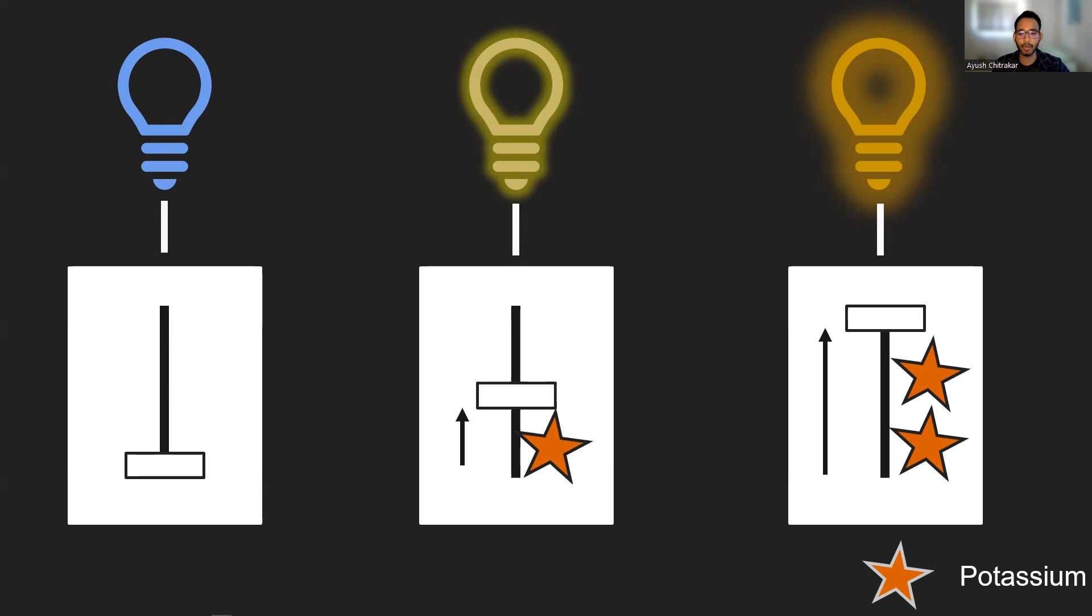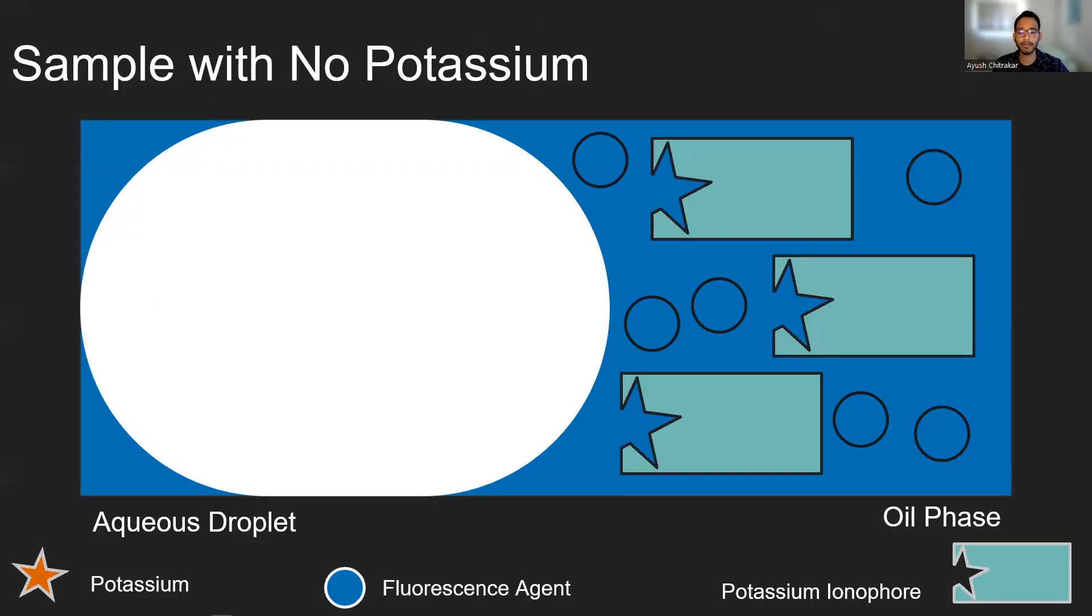So our potassium selective oil is sensitive to different amounts of potassium that is present in our solution. So how does the system actually work? When we have a sample with no potassium present, no potassium is able to bind to the potassium ionophore and therefore none of the fluorescing agent is able to fluoresce, resulting in no change in fluorescence or no change in brightness.